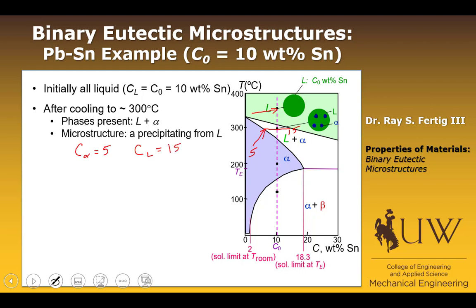We can compute the weight fractions using the lever rule. The weight fraction of alpha equals 15 minus 10 (the system composition) divided by 15 minus 5 (the composition of alpha), which computes to 0.5. The weight fraction of liquid must also be 0.5 since they must sum to 100%. So it's basically a 50-50 mixture of liquid and alpha.